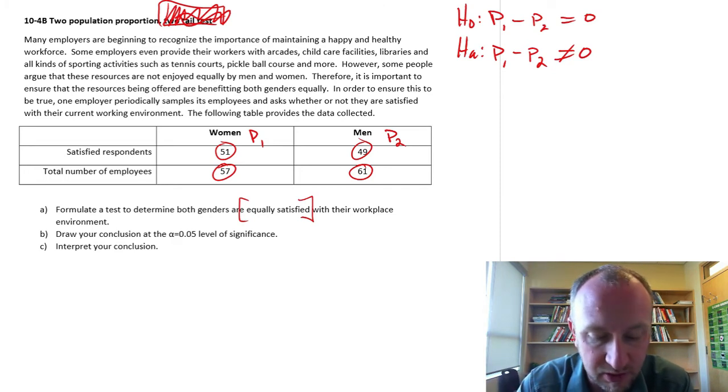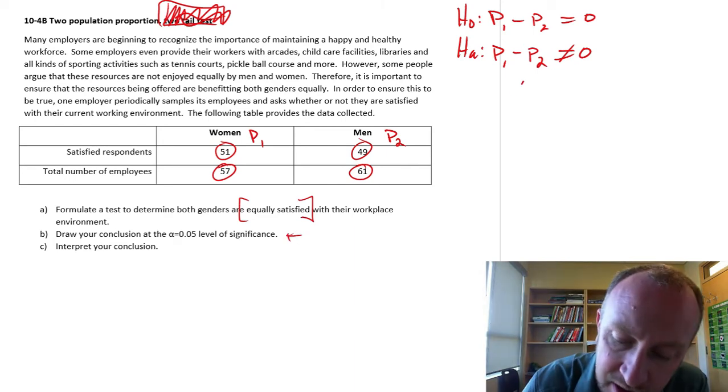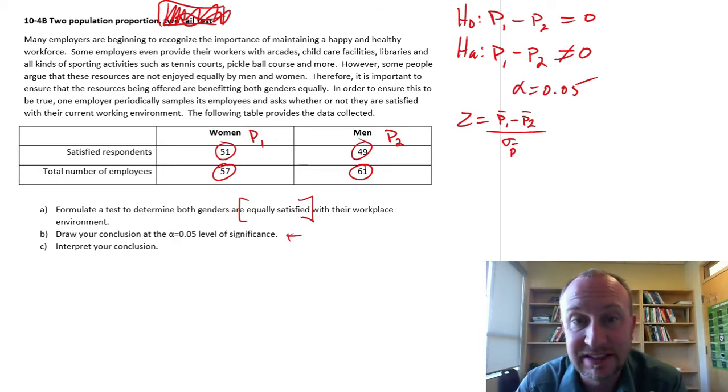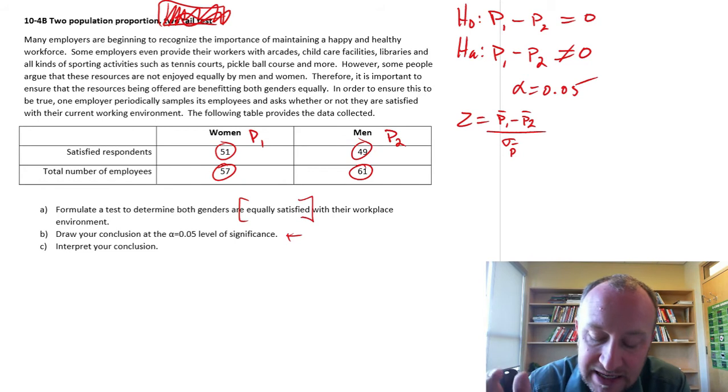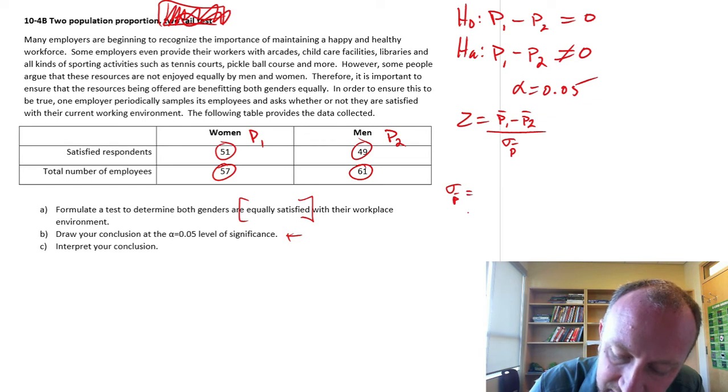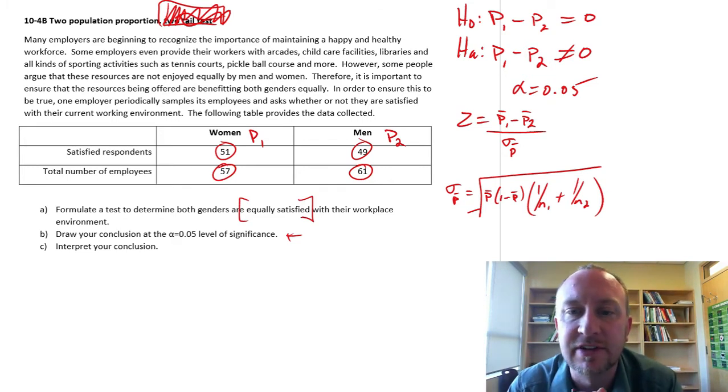We'll do this at the 0.05 level of significance. So what we need - we want our Z statistic. This is the difference in our point estimates divided by the standard error. So we have still to calculate our two sample proportions, and this standard error is also a little bit more tedious to calculate.